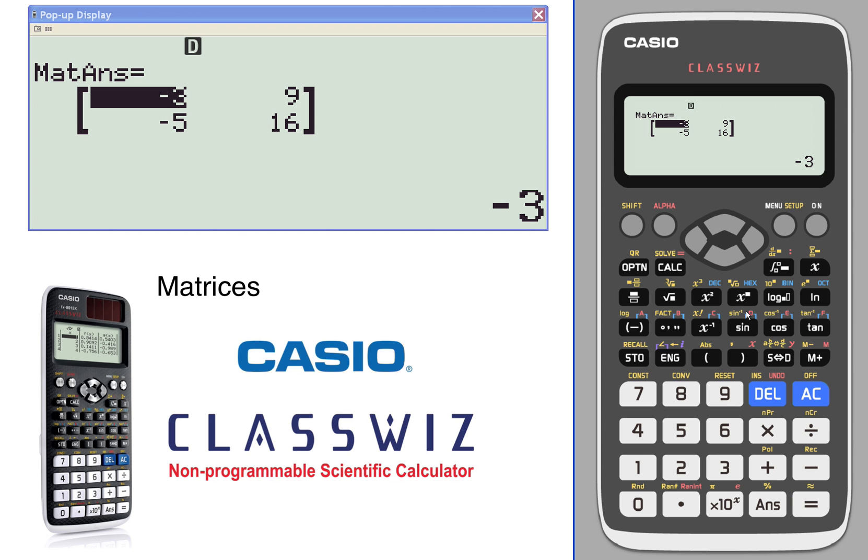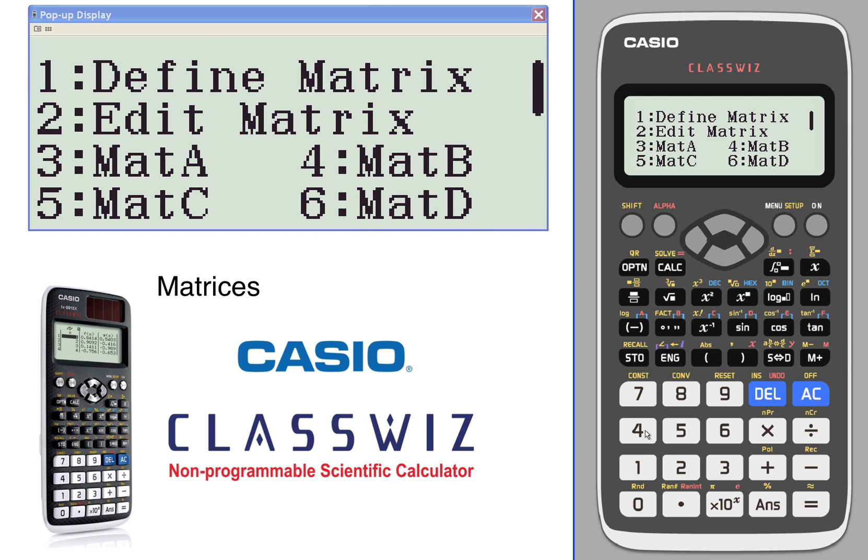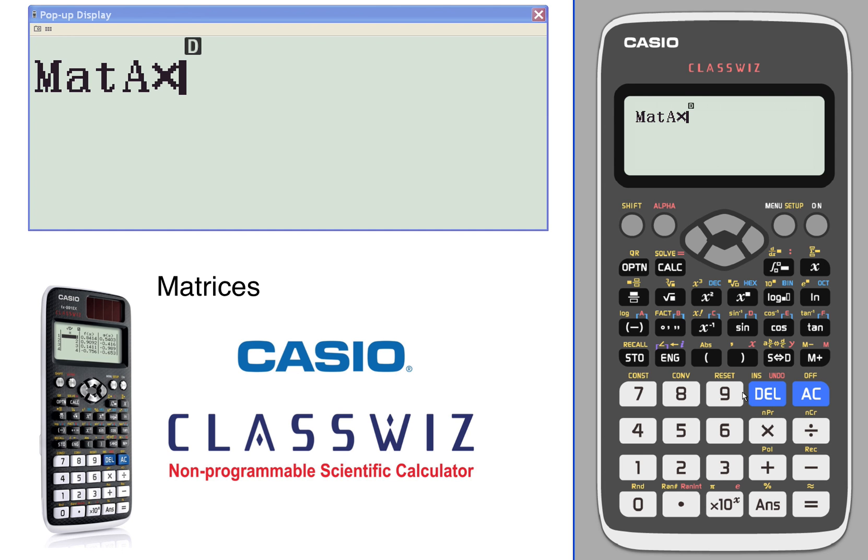Let's multiply matrices. We'll start with matrix A. Since this is a 2 by 2 and a 2 by 2, we can multiply the two matrices.